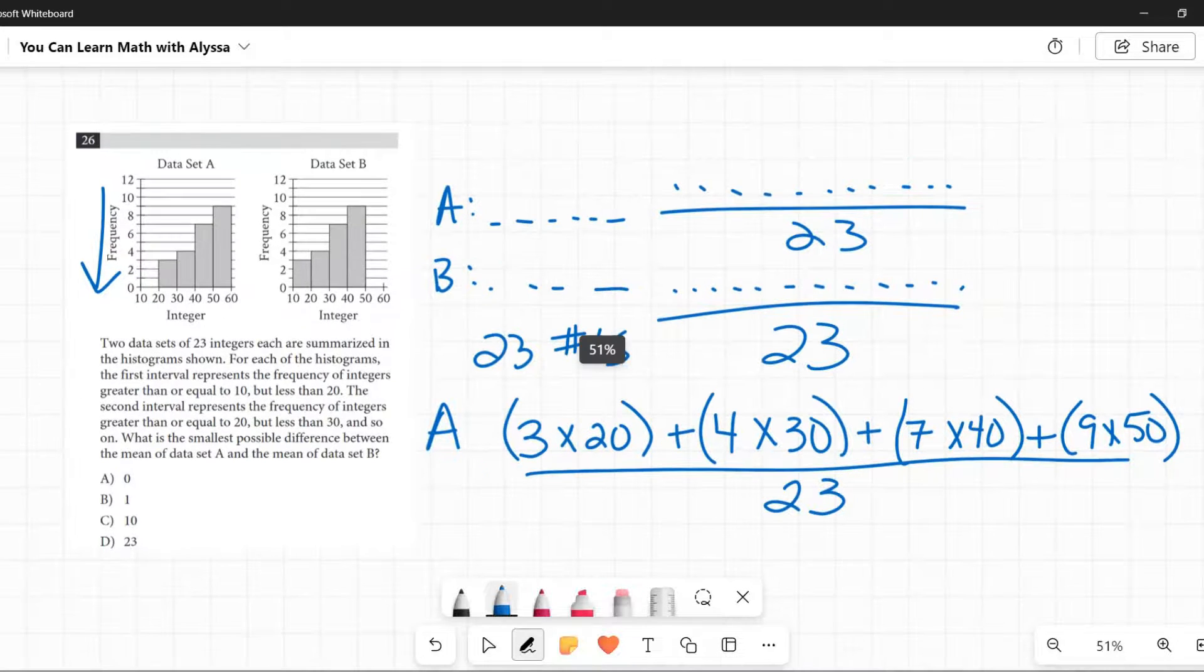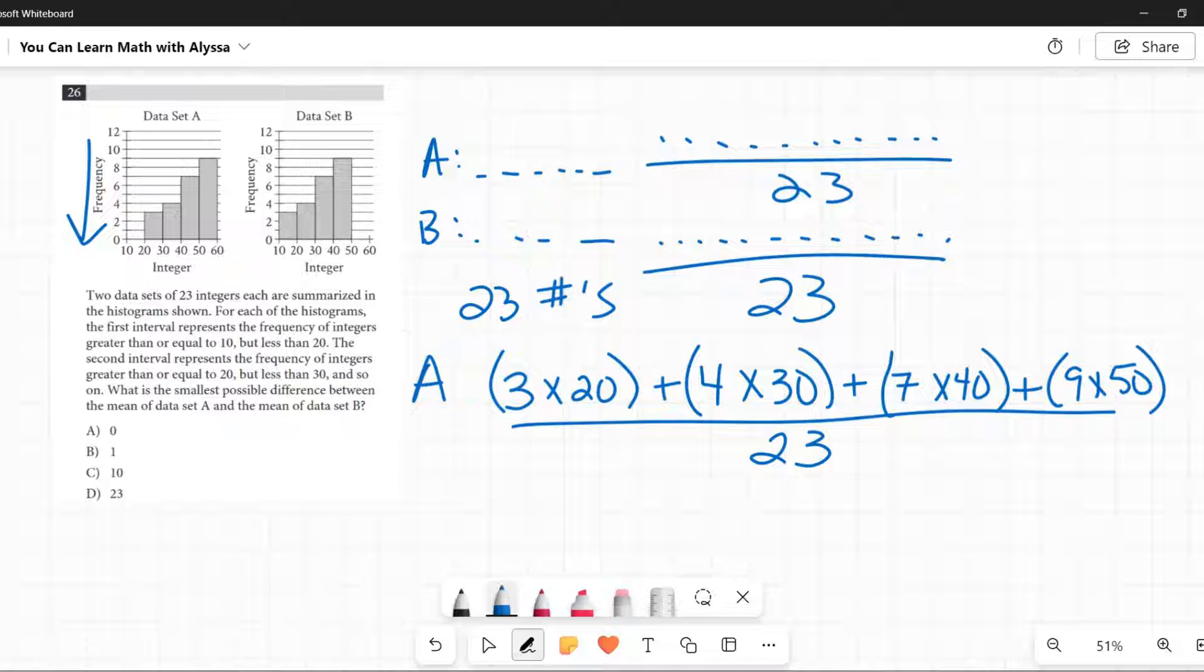Okay, now for B, what is in B? B, this lowest group that I have here, I have three of them. I want it to be as high as possible. Go from 10 to 19. So 3 times 19. Next one, it can go from 20 to 29, the next interval. I want it to be as high as possible, so it's going to be 29, and we got four of those.